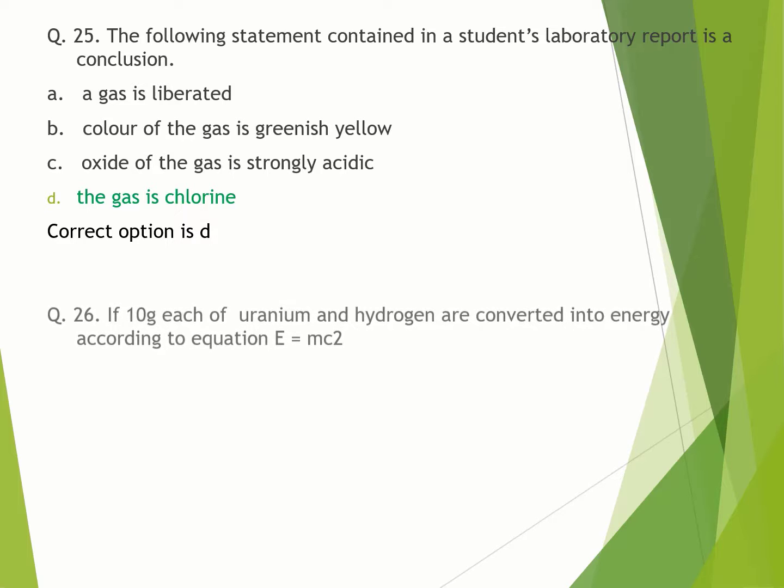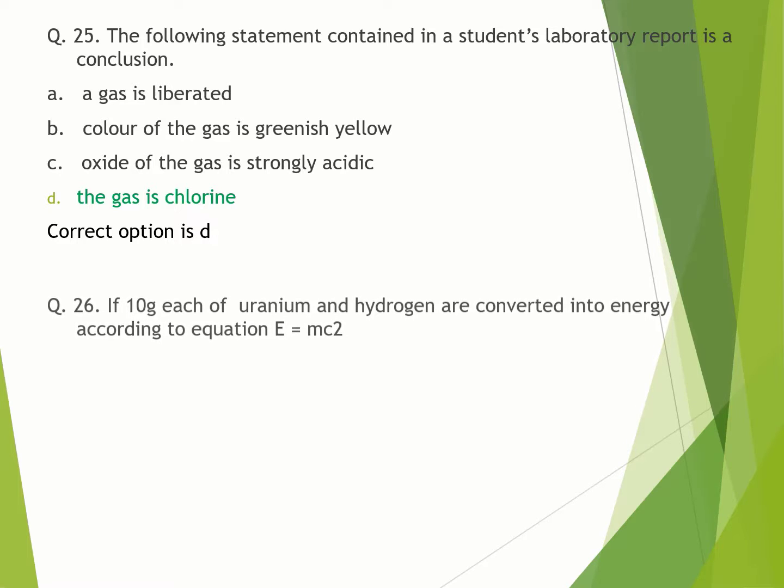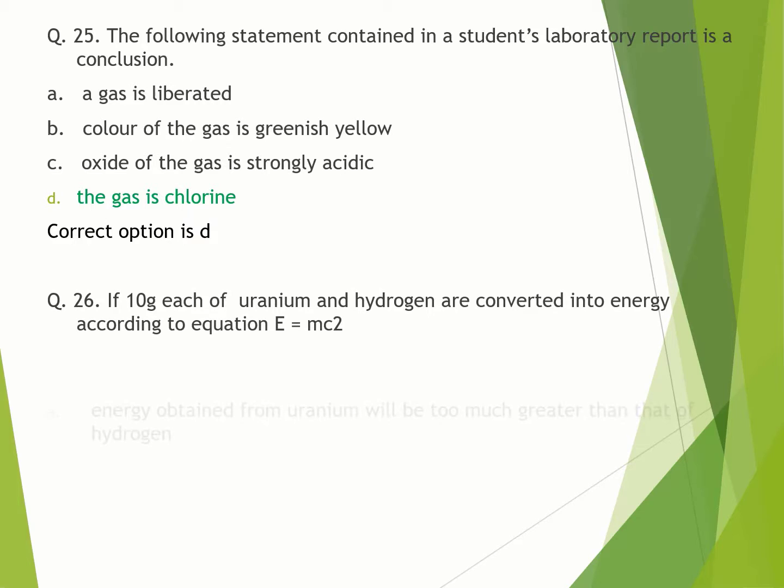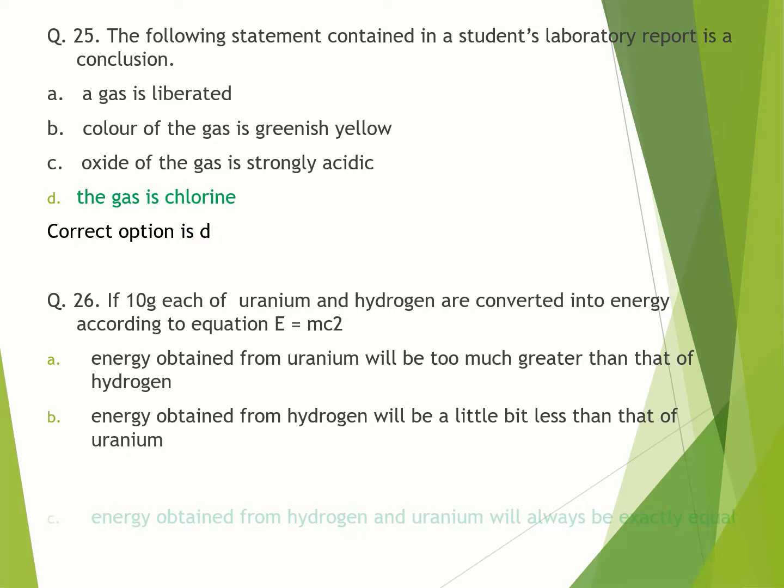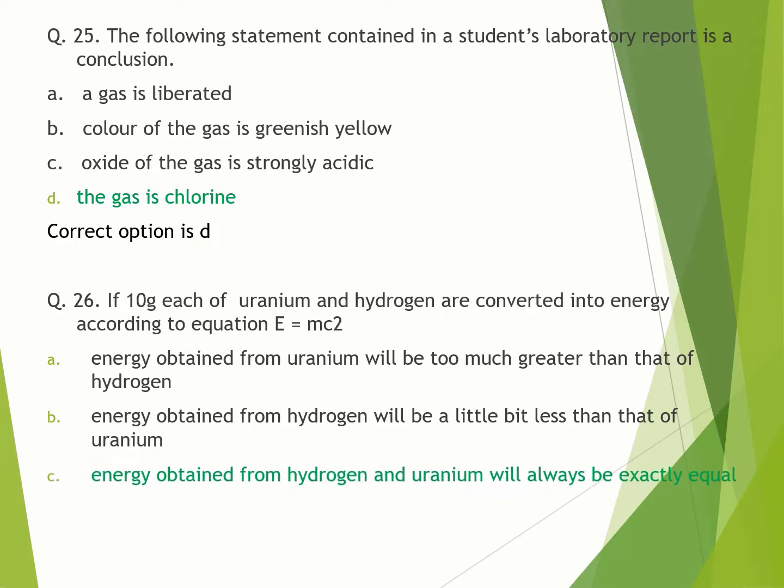Question number 26. If 10 grams each of uranium and hydrogen are converted into energy according to equation E equals MC square: A. energy obtained from uranium will be too much greater than that of hydrogen. B. energy obtained from hydrogen will be a little bit less than that of uranium. C. energy obtained from hydrogen and uranium will always be exactly equal. D. diamond. Correct option is C.